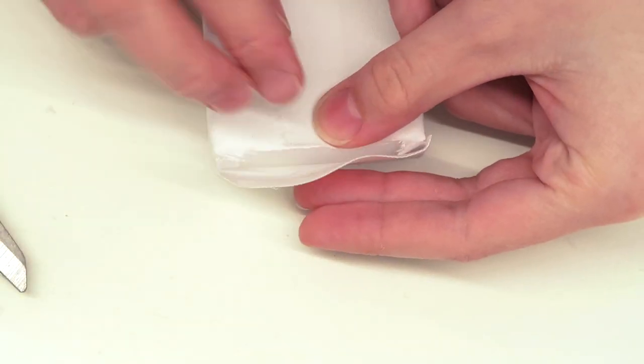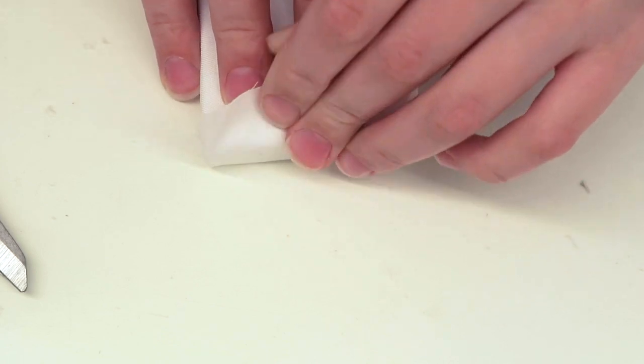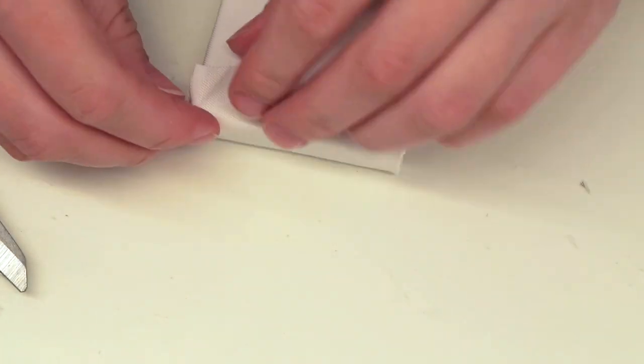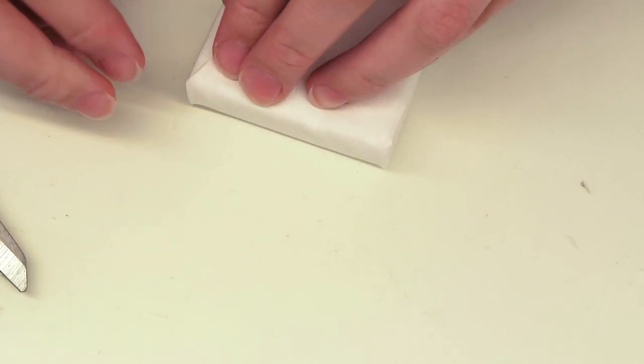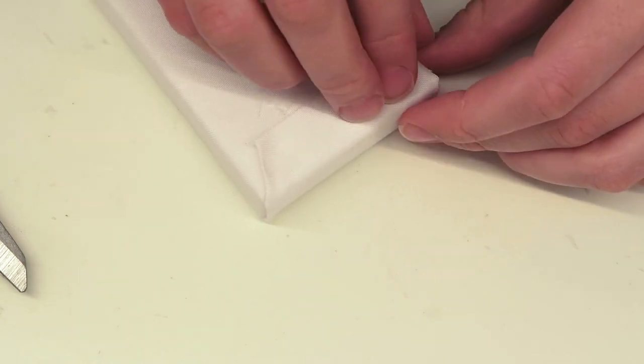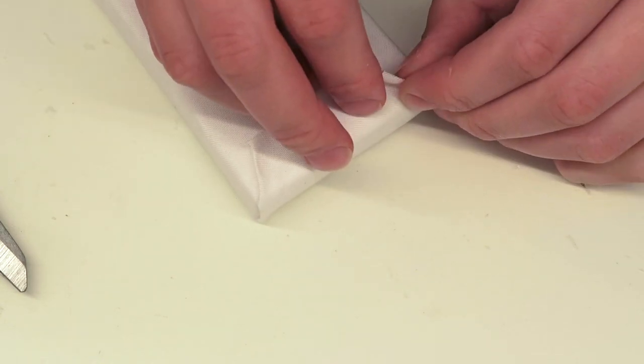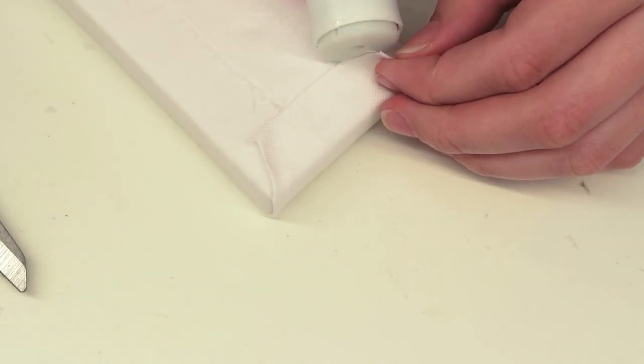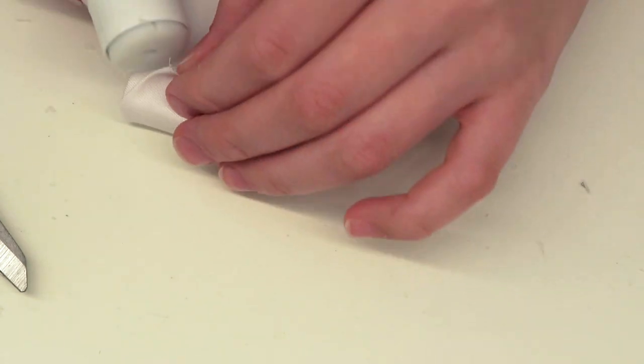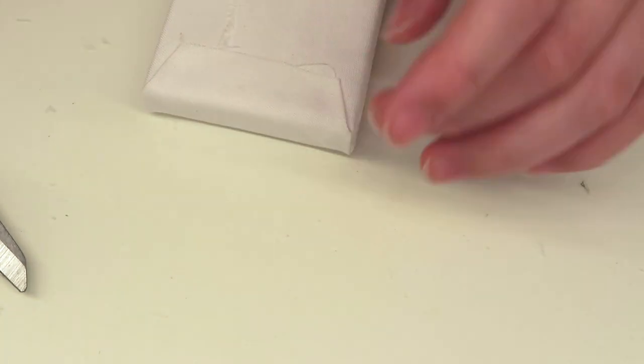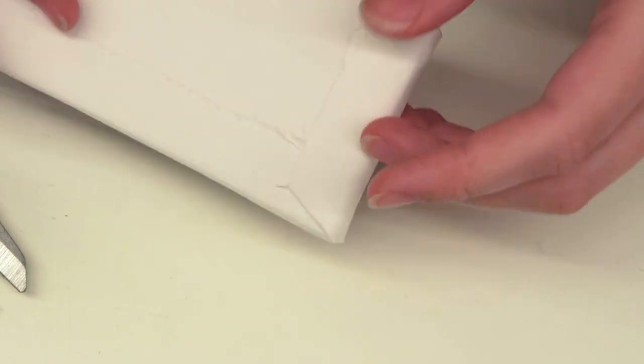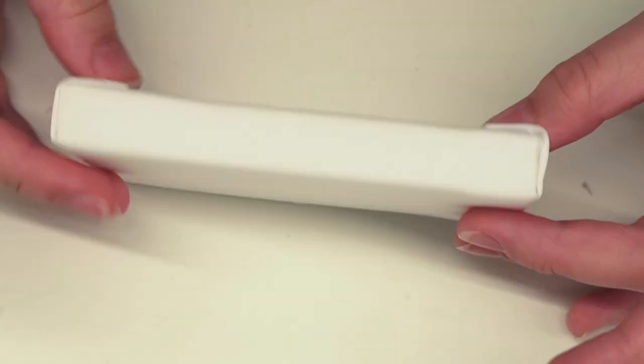Just glue that in place. You might need to tuck in the edges on this so they don't stick out. When you do that, you might want to add some extra glue so it stays flat. Once you're done with that, do it to both sides and you are done.